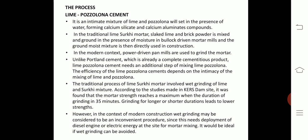This concludes the materials and constituents of lime pozzolano cement. Now let us study the process. Lime pozzolano cement is an intimate mixture of lime and pozzolano which sets in the presence of water, forming calcium silicate and calcium aluminate compounds. In the traditional lime surki mortar, slaked lime and brick powder are mixed and ground in the presence of moisture using bullock-driven mortar mills. In the modern context, power-driven pan mills are used. Unlike Portland cement which is already a complete cementitious product, lime pozzolano cement needs an additional mixing step.